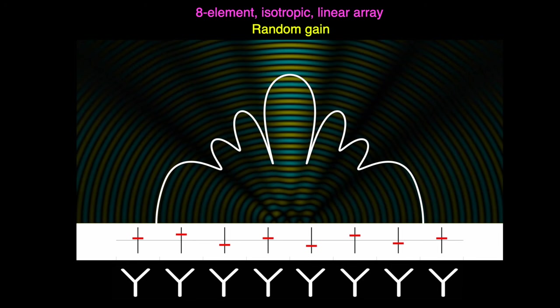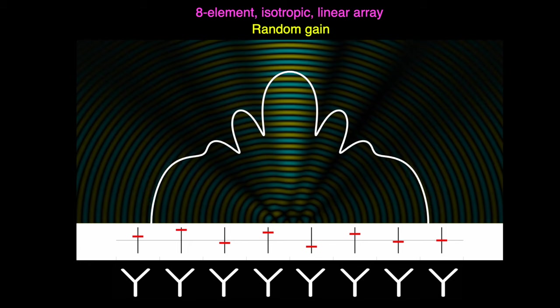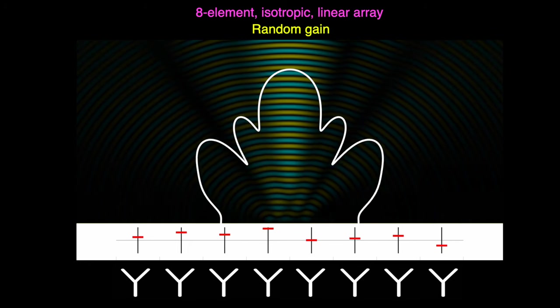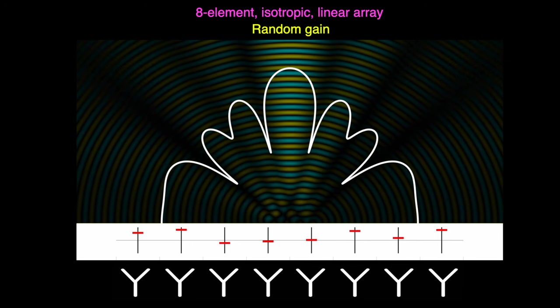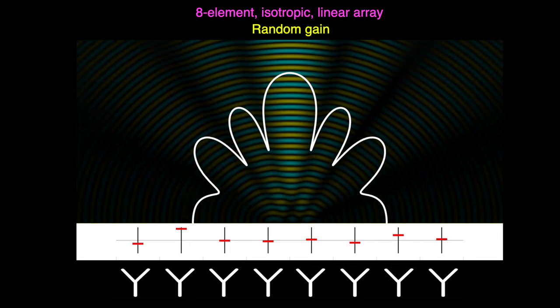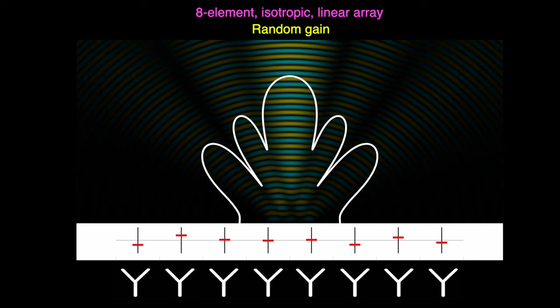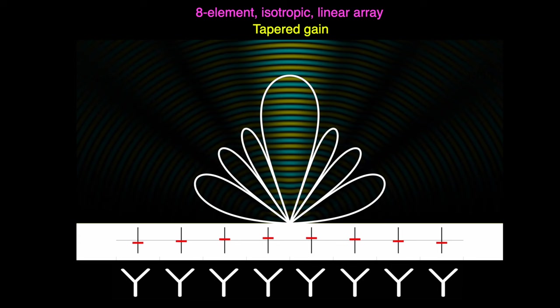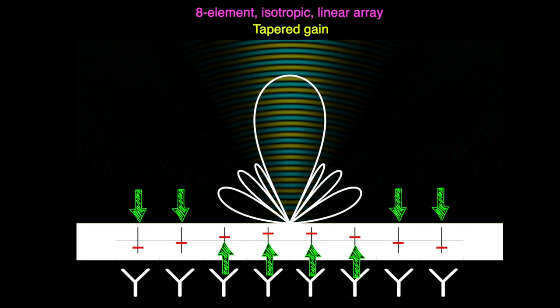Here I'm just cycling through random gains for each element, and you can see how much the side lobes grow and shrink and change. Now, most of these random patterns are much worse than the original uniform gain. But here's what's interesting. Instead of just choosing any random gain, if we taper the gain to each element in a way that lowers the power to the edge elements, but increases the power to the center elements, we can lower the gain of all of the side lobes. Check them out. They're much smaller now.